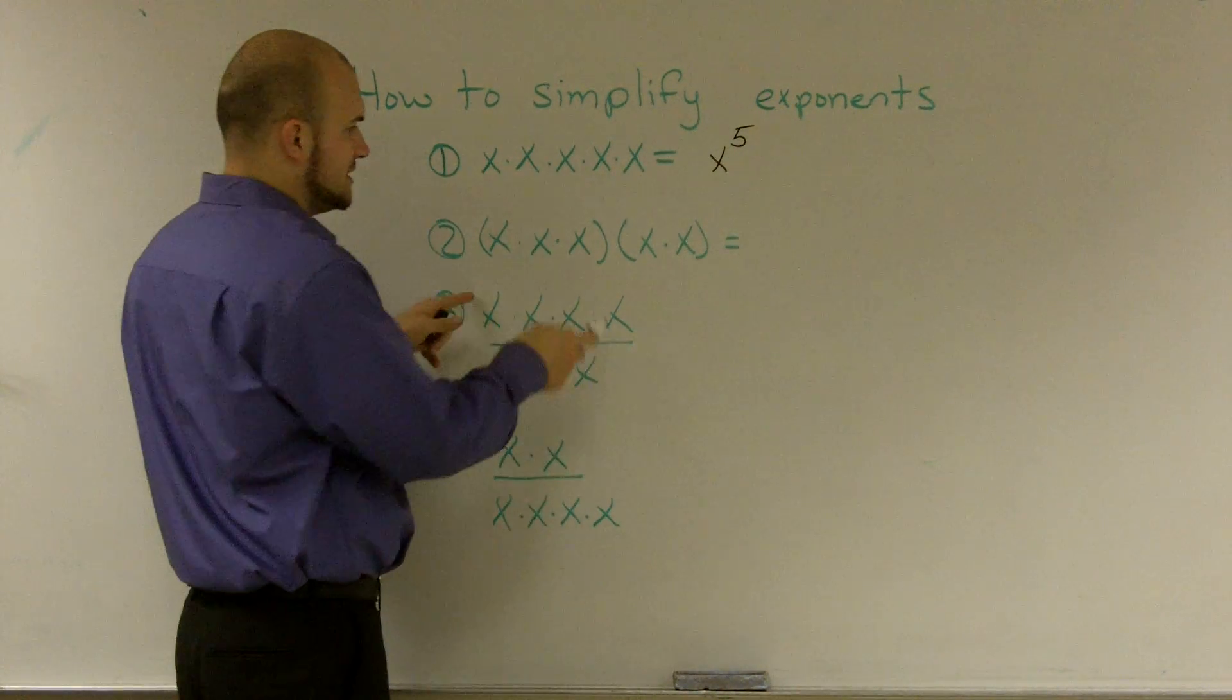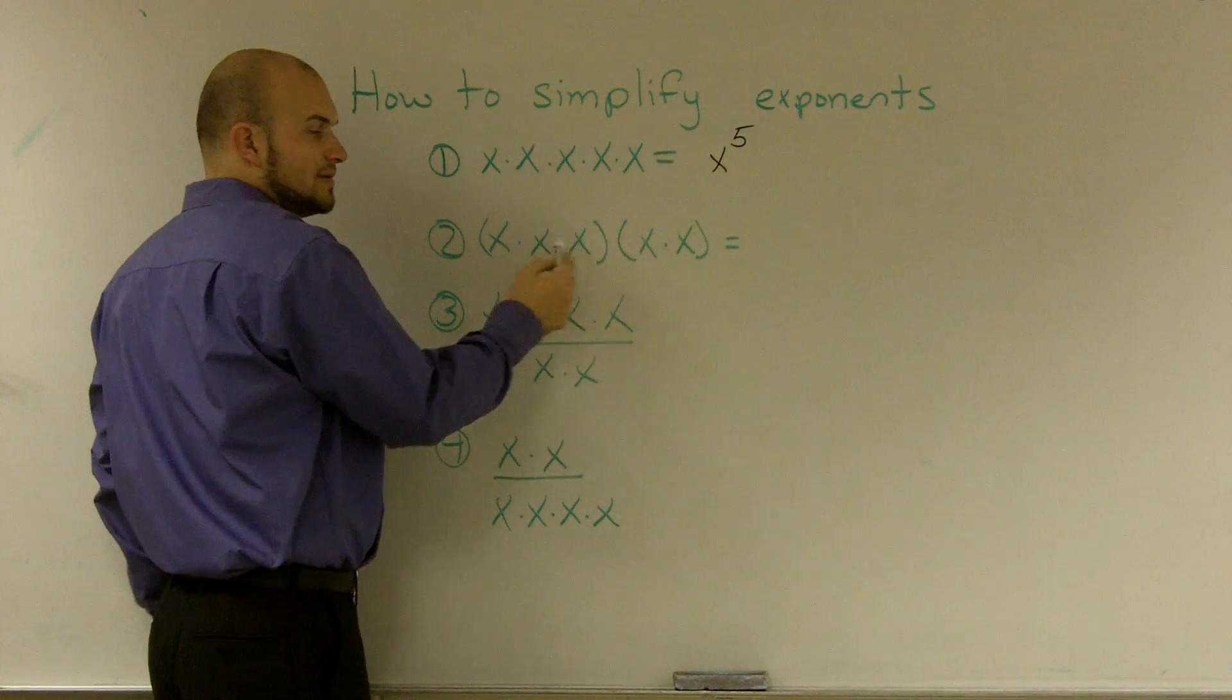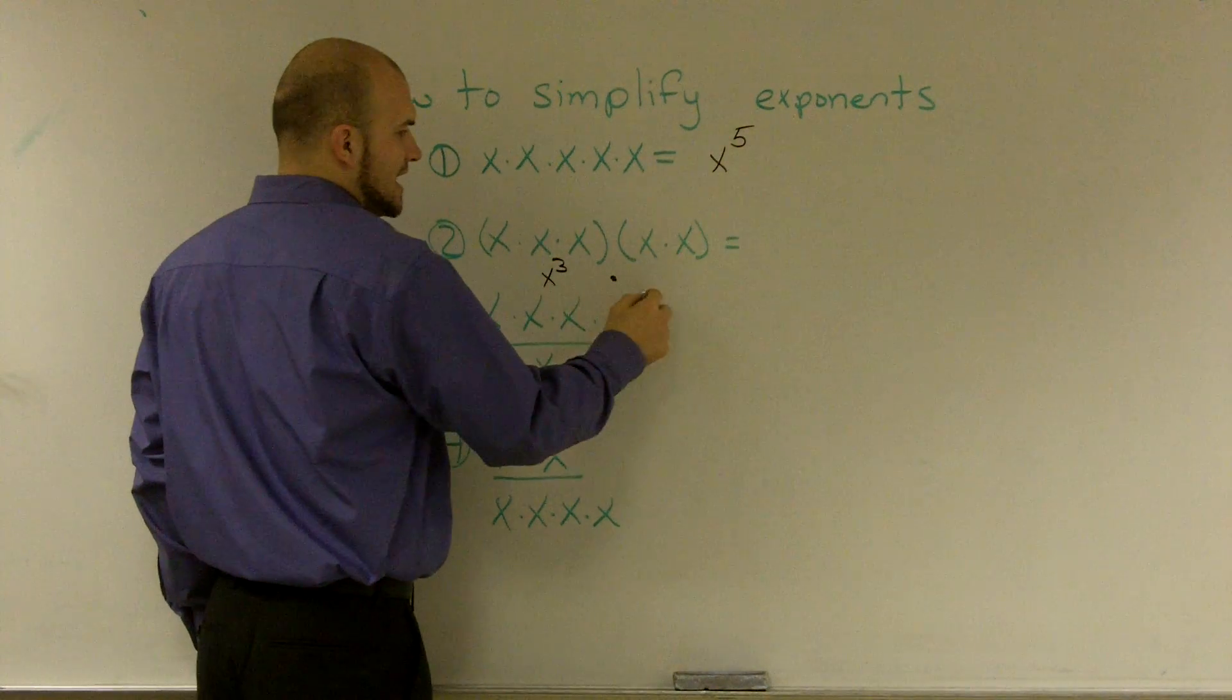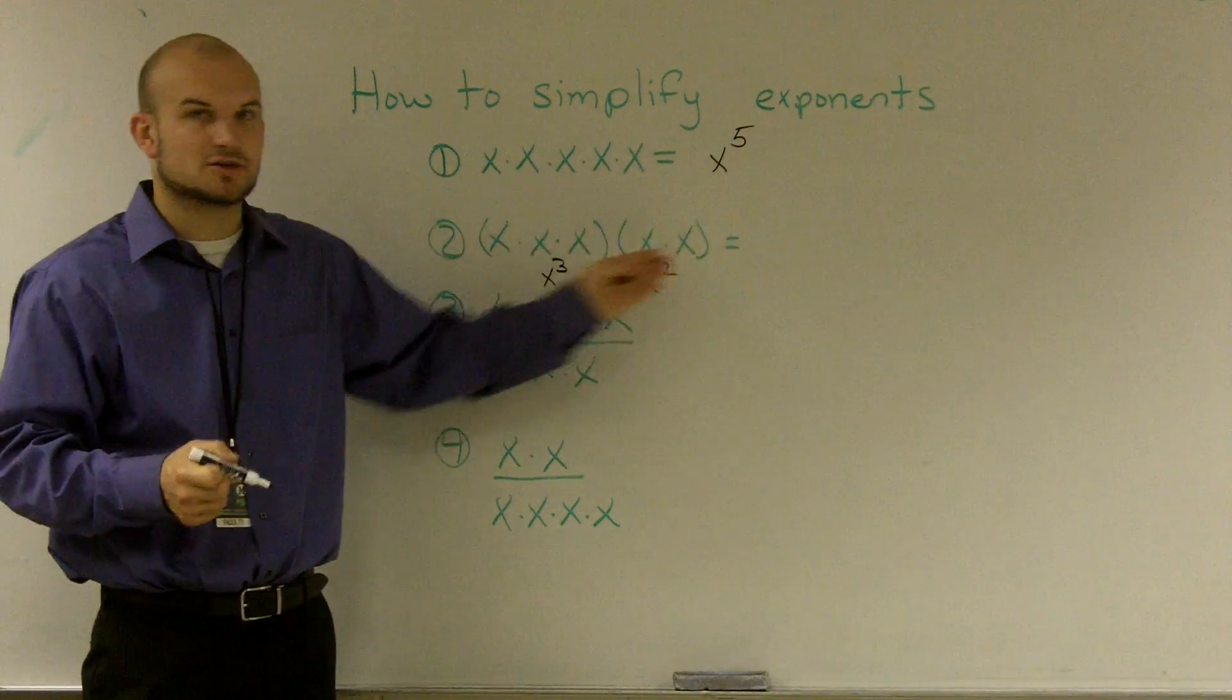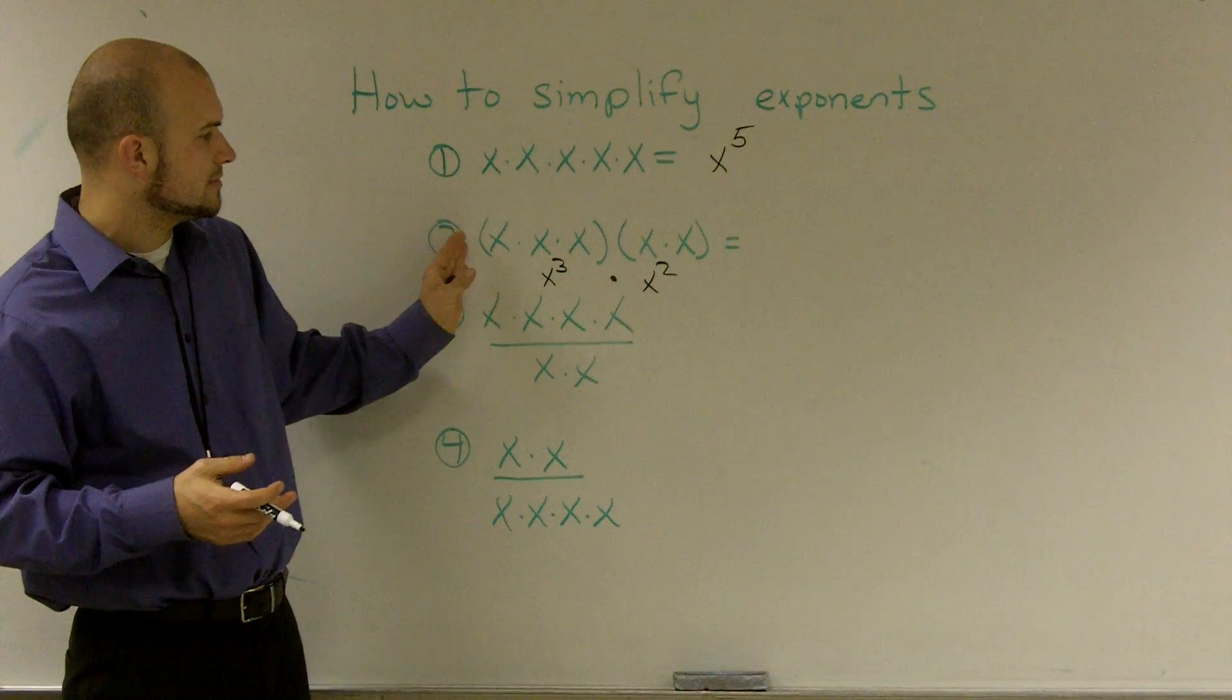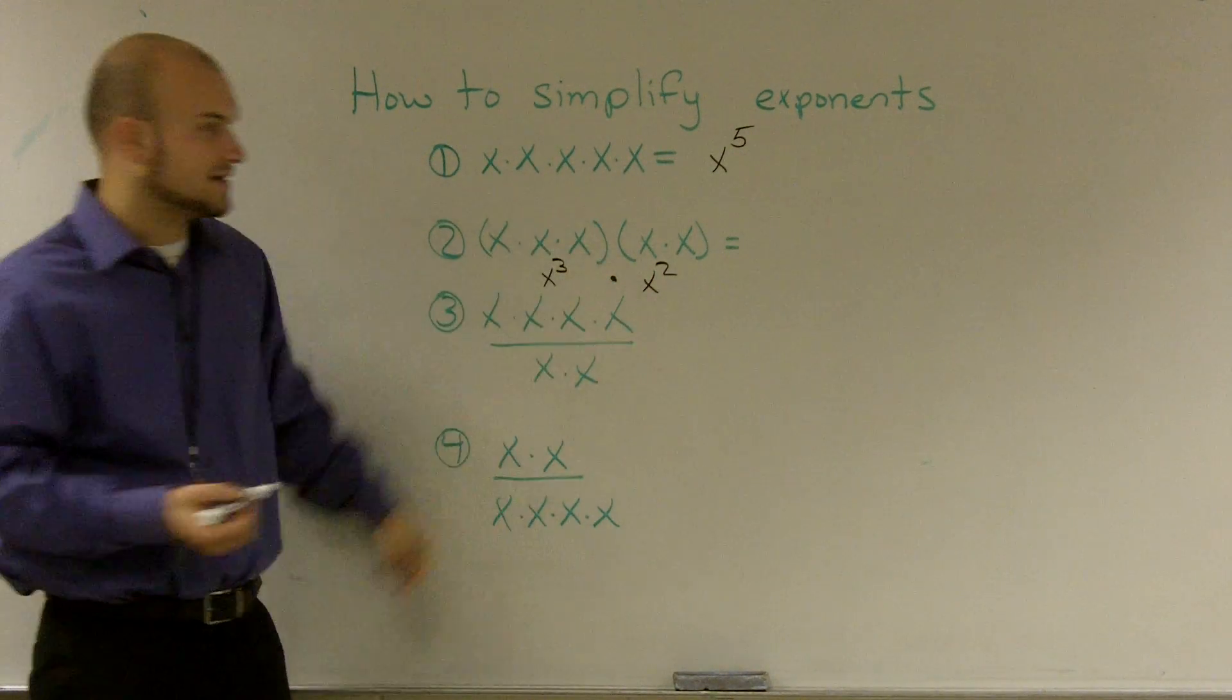Now essentially, if you look at this, I'm doing the exact same thing again. But now I broke it into parentheses. So really what I did was x to the third times x squared. However, if I got rid of those parentheses, because the multiplication goes all the way through, this is really essentially x to the fifth.